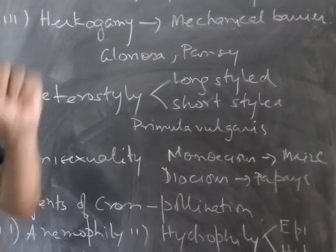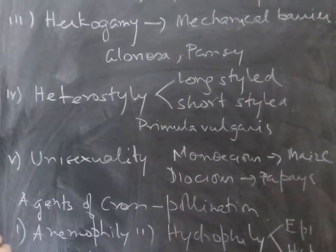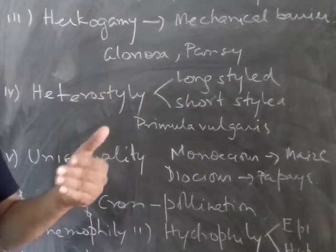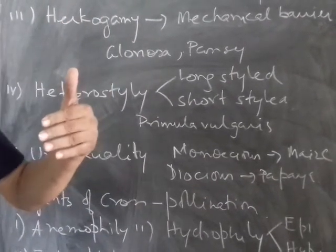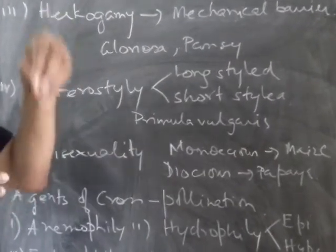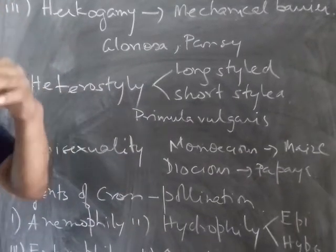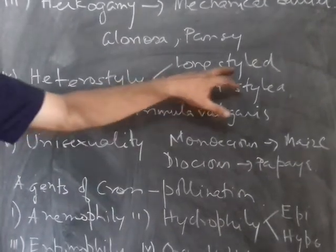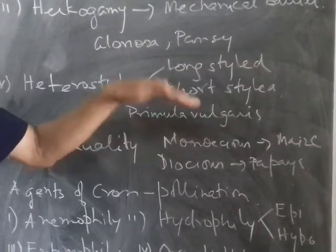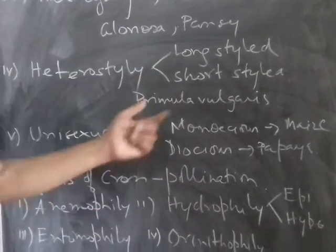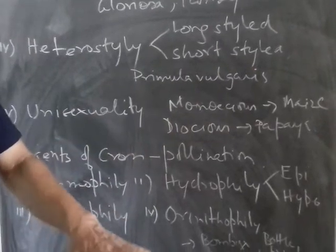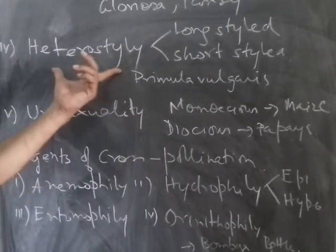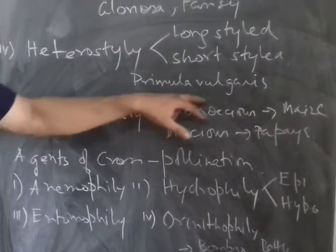Heterostyly is another contrivance where the style is of a different length than the anther filament. If the anther filament is longer than the style, or the style is longer than the filament, the chances of pollen falling on the stigma of the same flower are reduced. Long-styled and short-styled forms both lead to cross-pollination. Primula vulgaris is an example of heterostyly.